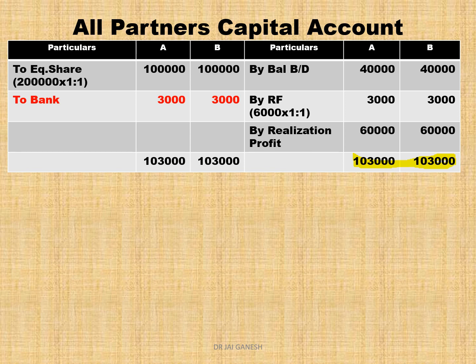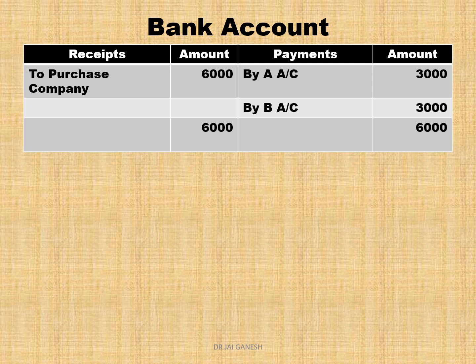The final settlement to A and B is 3,000 each in cash from the bank. For the bank account: debit side records receipts, credit side records payments. The only receipt is from the purchasing company — cash of 6,000 and equity shares worth two lakhs. The 6,000 in cash is received and 3,000 each is paid as final settlement to A and B. The bank account tallies with 6,000. Thank you.